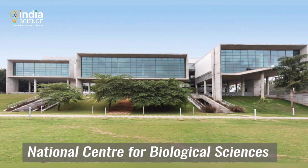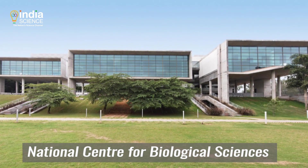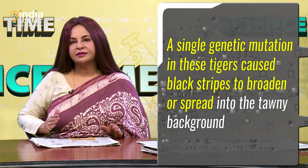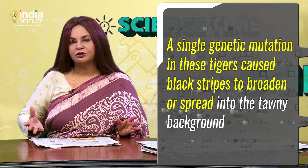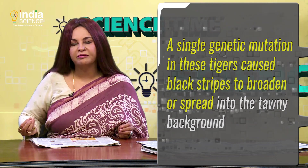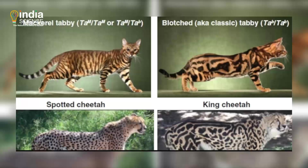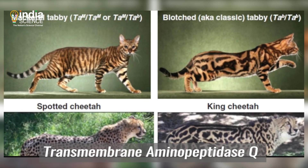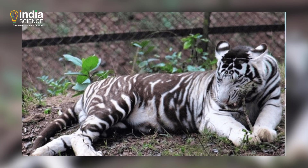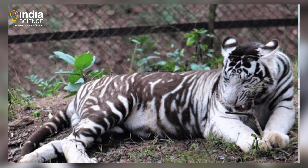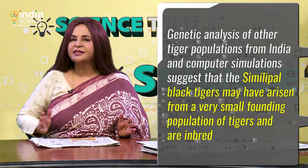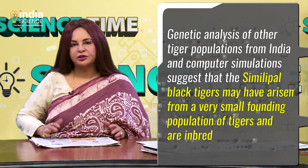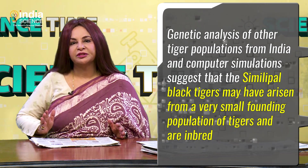The study found that a single genetic mutation in these tigers caused black stripes to broaden or spread into the tawny background. The team found that a single mutation in the gene transmembrane amino peptidase Q causes the black tigers to develop stripes that appear to have broadened or spread into the tawny background. Genetic analyses of other tiger populations and computer simulations suggest that the Similipal black tigers may have arisen from a very small founding population.